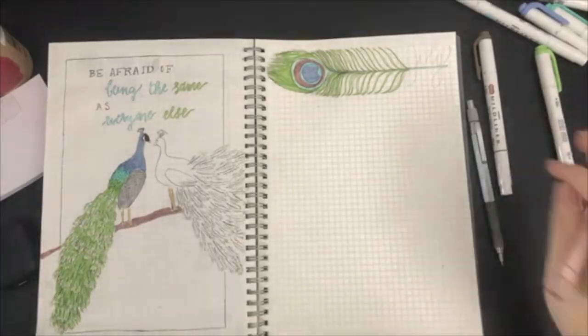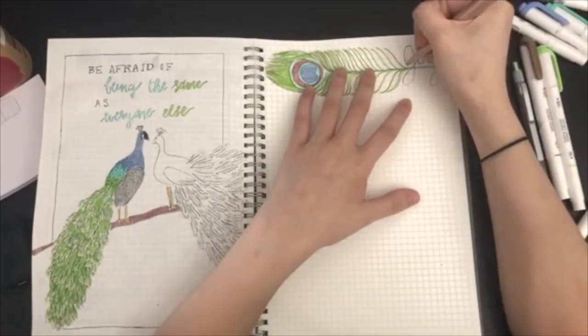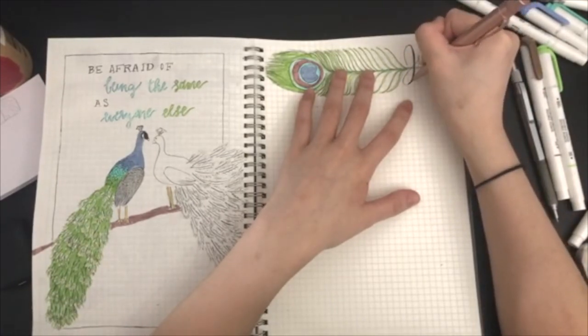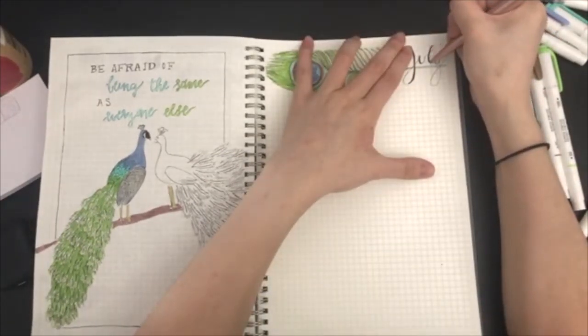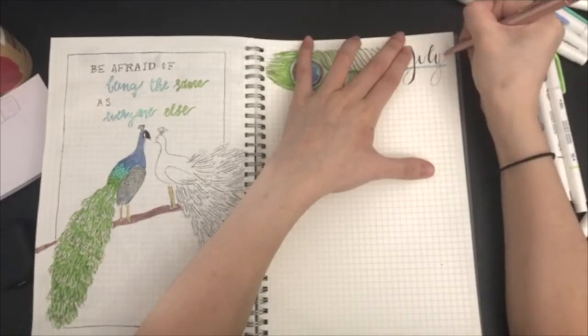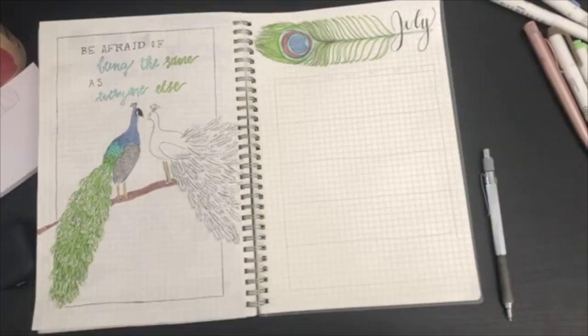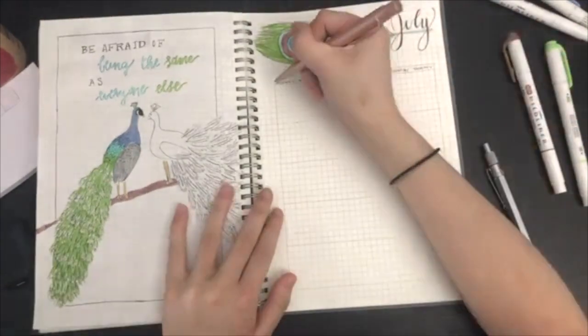I'm going to write July in this nice, really cursive, flowy font. Because, you know, peacock's majestic. And then I'm going to go back to all of the downstrokes and make them thicker, you know. This is faux calligraphy here. Some tips. And I think it just gives it a really nice, majestic, fancy vibe.